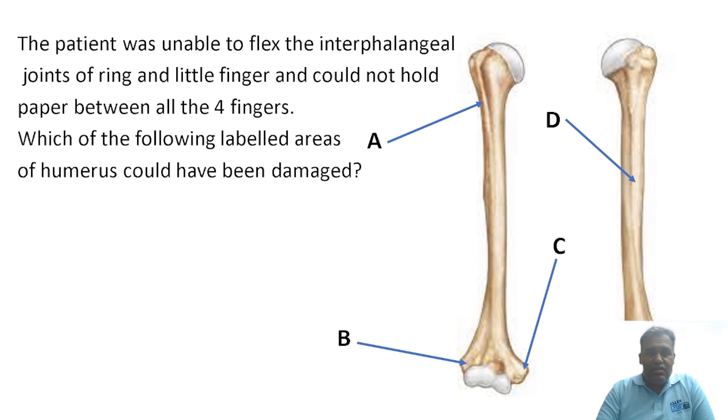First question is giving us a bone and asking about a clinical scenario: the patient is unable to flex the interphalangeal joints of the ring and little fingers, and could not hold paper between all four fingers. Which of the following labeled areas of humerus could have been damaged?